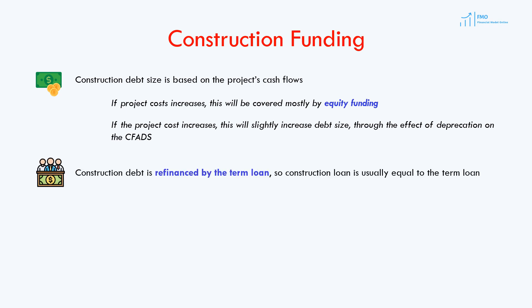The construction loan is typically refinanced by the term loan at the construction completion. There are two types of refinancing. First, we have soft refinancing, which is a renegotiation of the loan conditions such as interest rates and covenants — conditions that do not fundamentally change the risk profile of the loan.